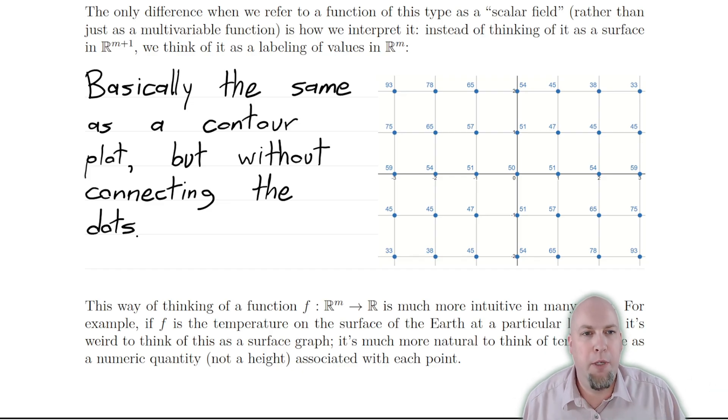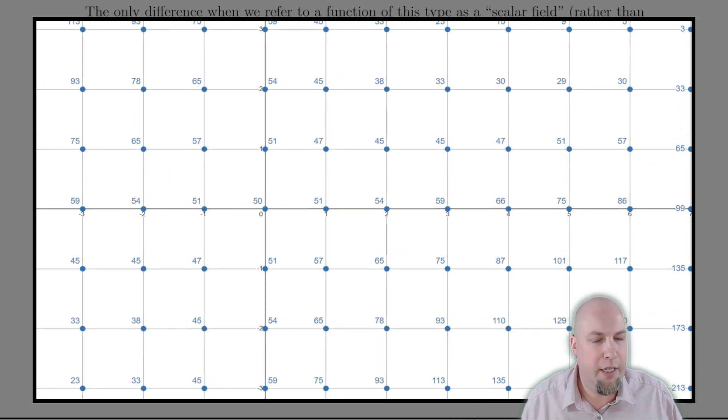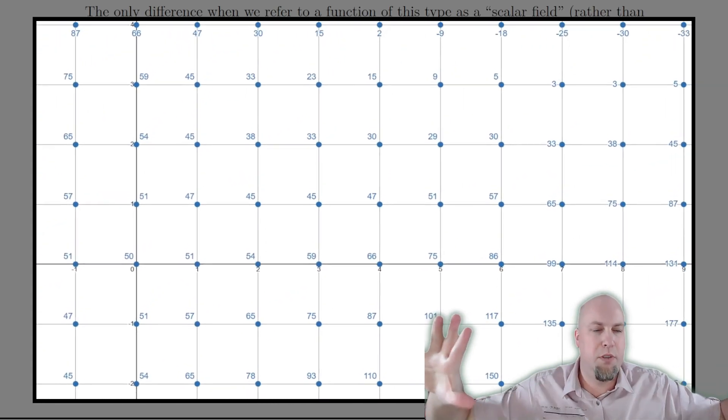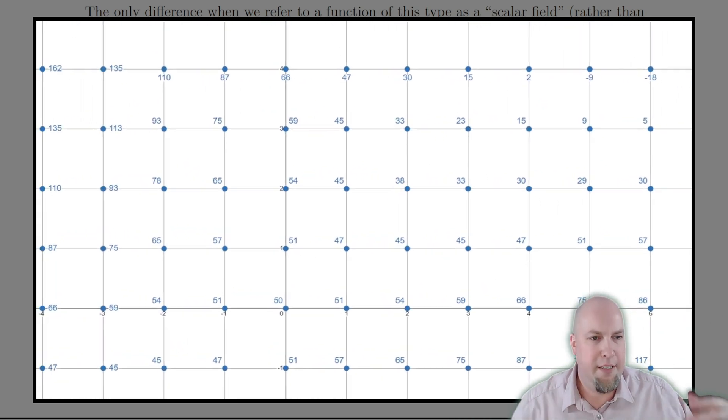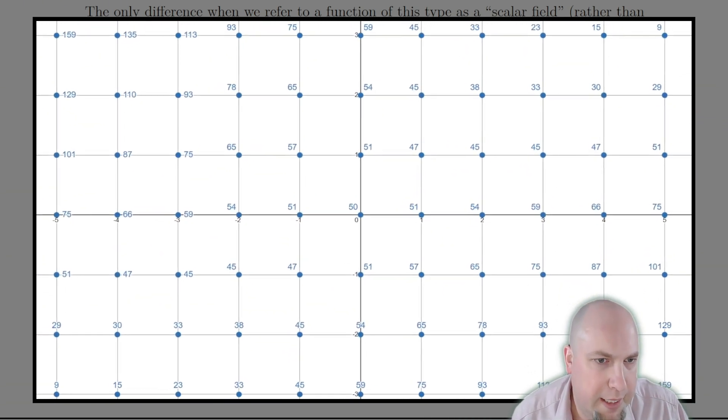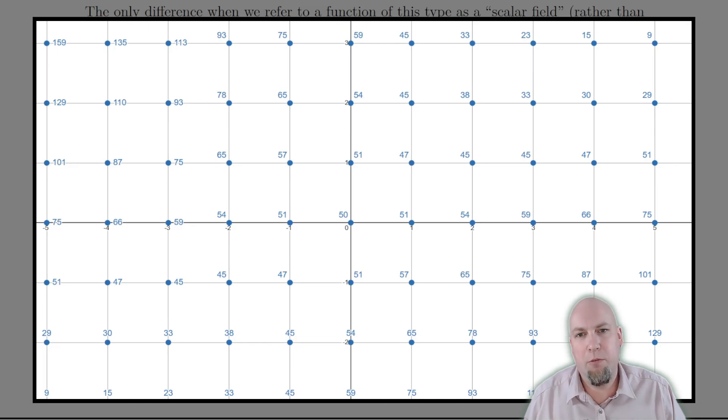Now of course, we can't do this for every point, because there are infinitely many points everywhere in every interval. If we did that, we wouldn't be able to see what the labels are on these points. So we just do it for some discrete grid, usually integers, maybe every half integer or something like that. And that gives us a rough idea of what the scalar field looks like.